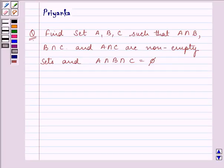Hi and how are you all today? Let us proceed with the question that is given to us. It says, find set A, B and C such that A intersection B, B intersection C and A intersection C are non-empty sets and A intersection B intersection C is equal to the empty set.